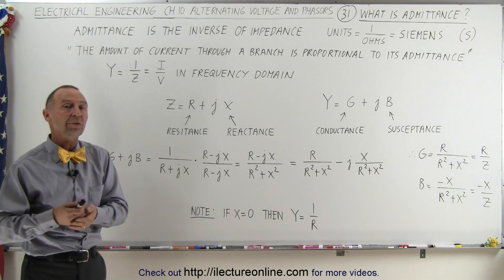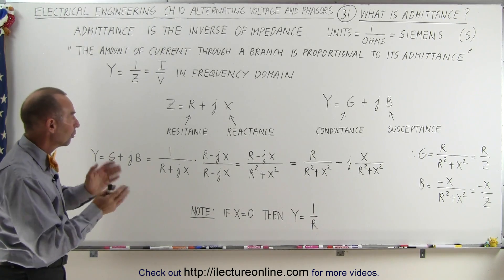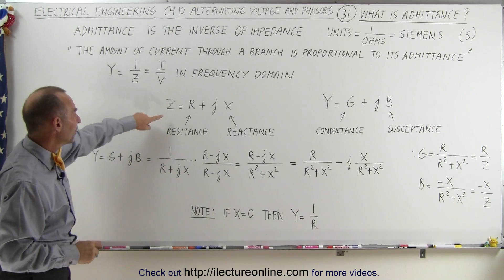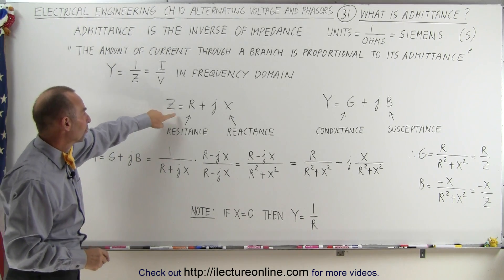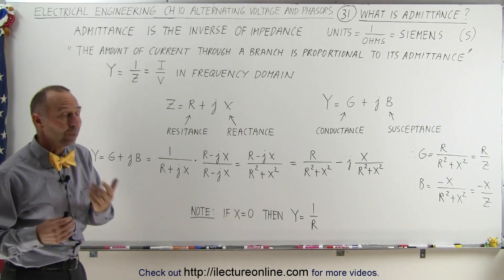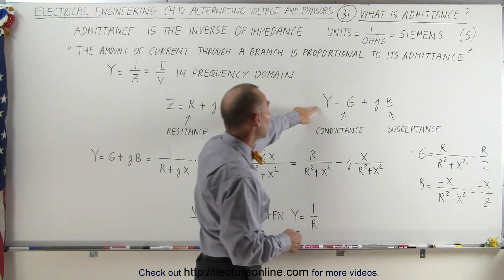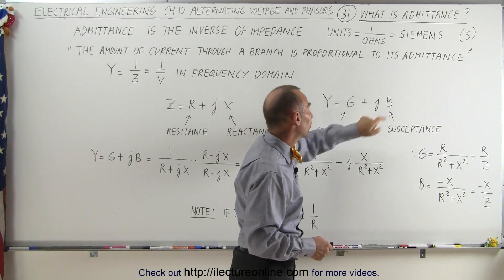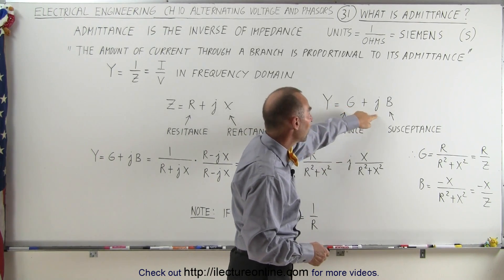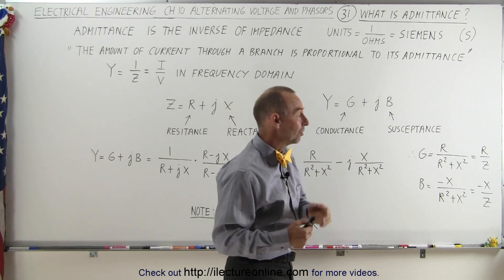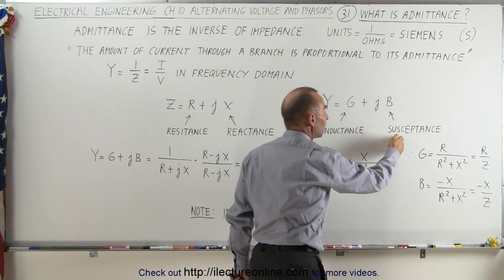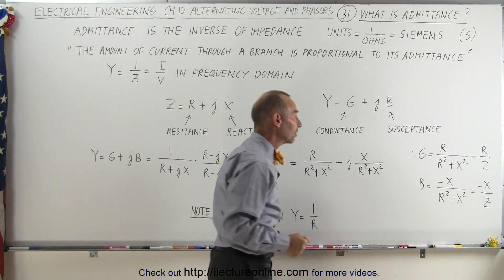If there's capacitance and inductance in the circuit, there will be a phase angle to the admittance. If we imagine that the impedance is written as the resistance plus J times the reactance, then we can write the admittance in the same way: Y equals the conductance plus J times the susceptance. The conductance is the inverse of resistance, the susceptance is the inverse of the reactance.